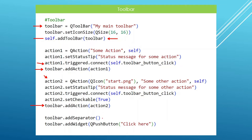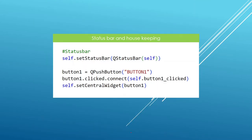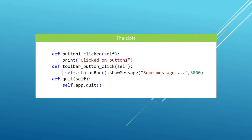We can add a separator in our toolbar and even add a push button to the toolbar. To use the status bar, you set the status bar on your main window using the setStatusBar method, creating a status bar object in place. We also have a button showing up as our central widget. Down here we have methods that respond when buttons or toolbar items or menu items are clicked, including the quit method.